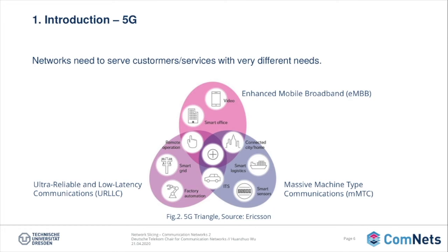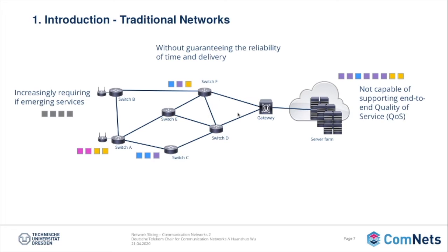This shows a traditional network where packets from multiple services are transmitted. These services are marked with different colors. The traditional network basically offers a best-effort service, which means each network device only tries its best to send out the packet. Therefore, the traditional network provides no guarantees on timeliness or delivery of data. The traditional network is also commonly not capable of supporting quality of service, especially end-to-end quality of service, because each network device doesn't have a holistic view of the whole network.